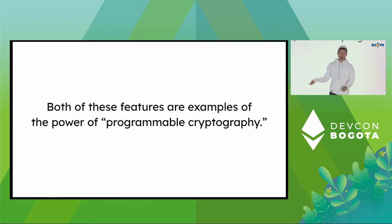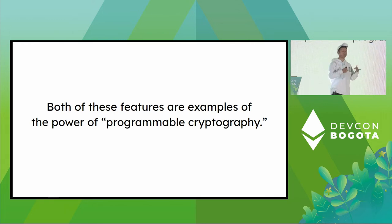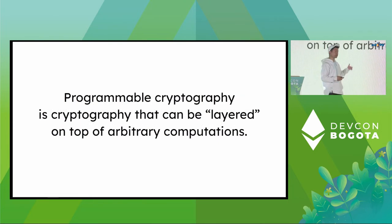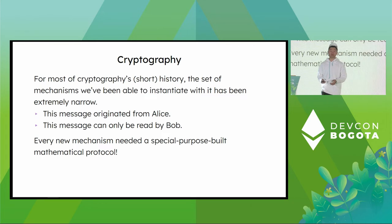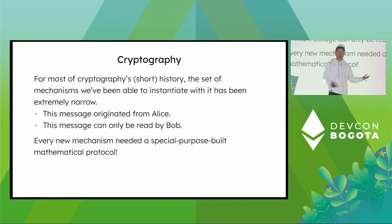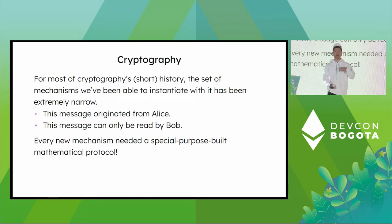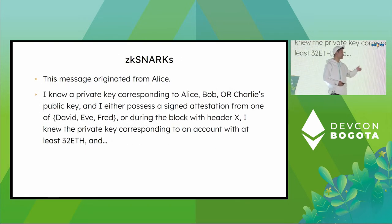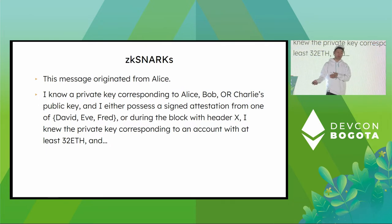Both of these features are examples of the power of programmable cryptography — tools that allow us to much more flexibly manipulate digital objects. My description of programmable cryptography is that it is cryptography that can be layered on top of arbitrary computations. To contrast with cryptography we've used for decades: for most of cryptography's short history, the set of mechanisms we could instantiate was quite narrow. We could say things like 'this message originated with Alice' or 'this message can only be read by Bob,' but every new mechanism required building a new special-purpose cryptographic system.